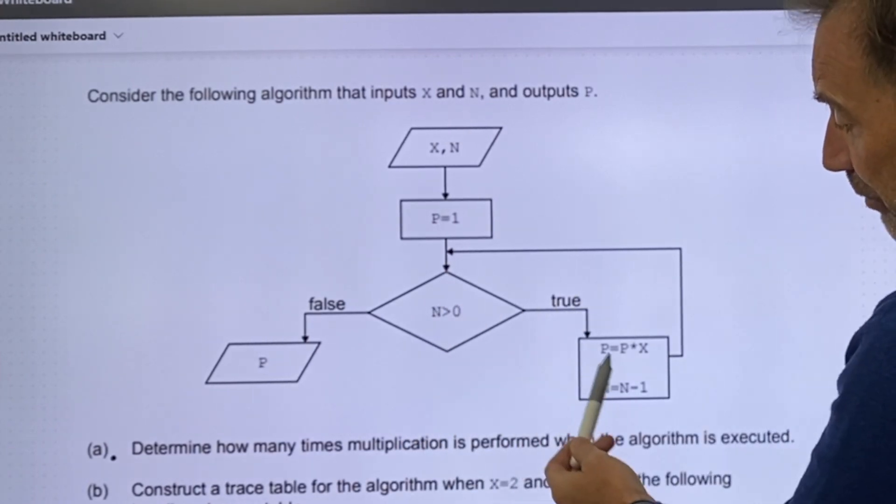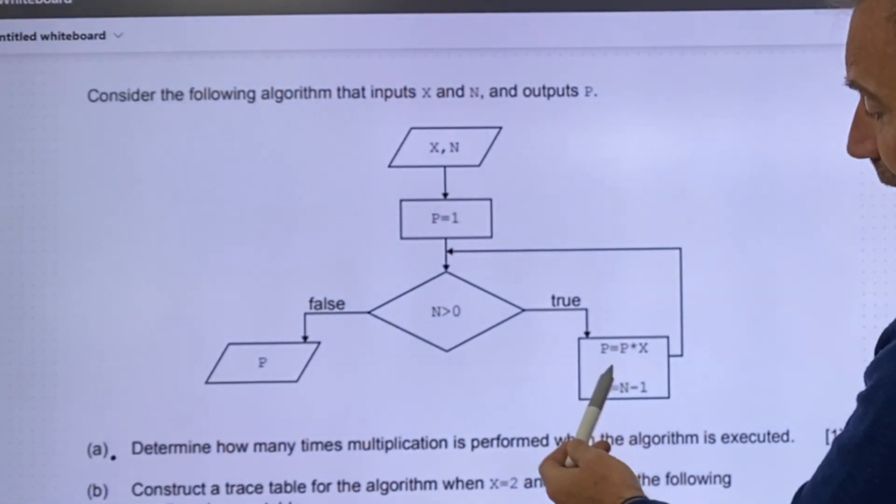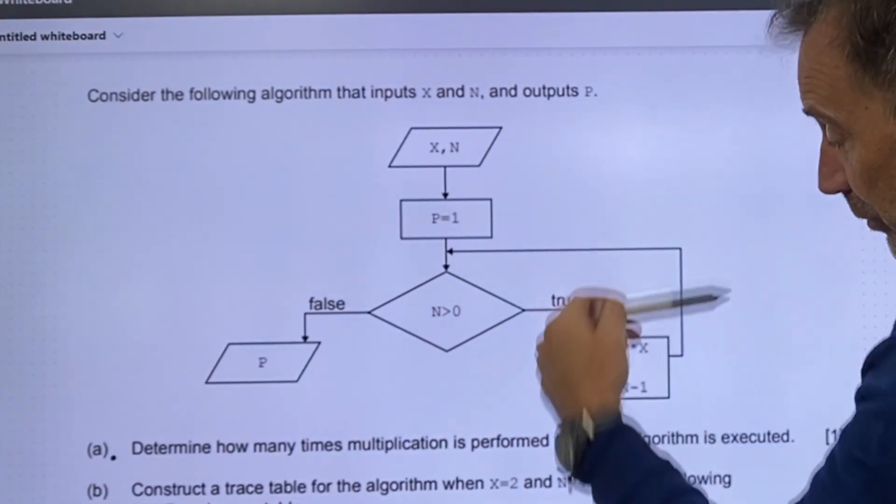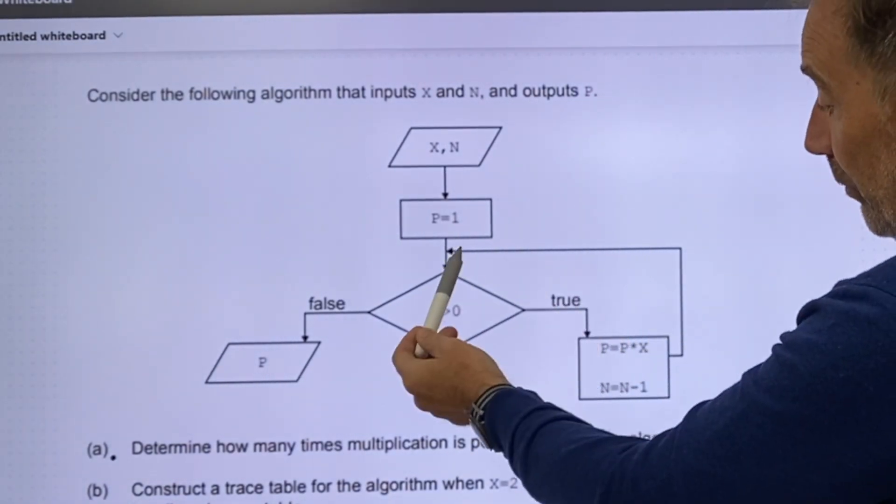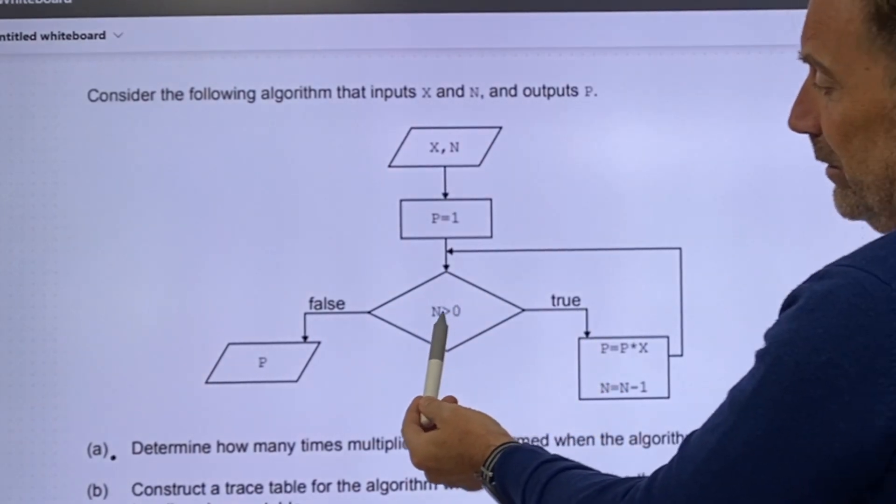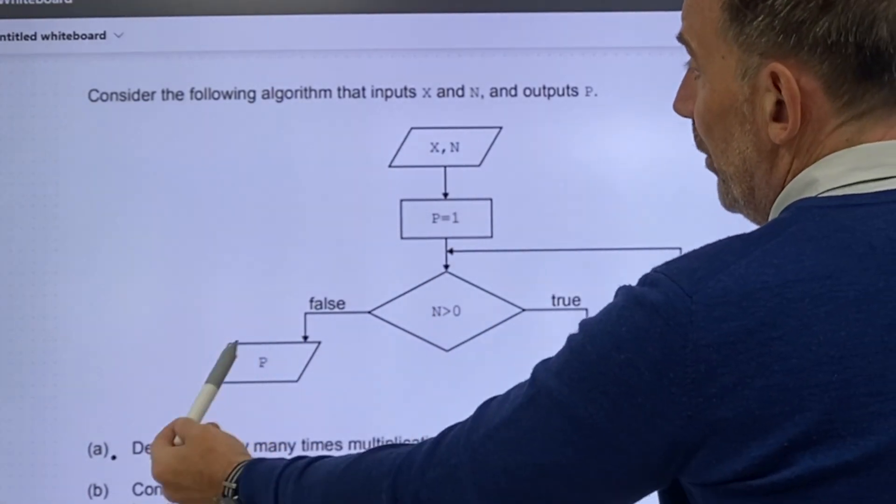We've got two values x and n. P equals one. Going down, n is greater than zero. If that's true, if n is greater than zero, then p equals p times x.